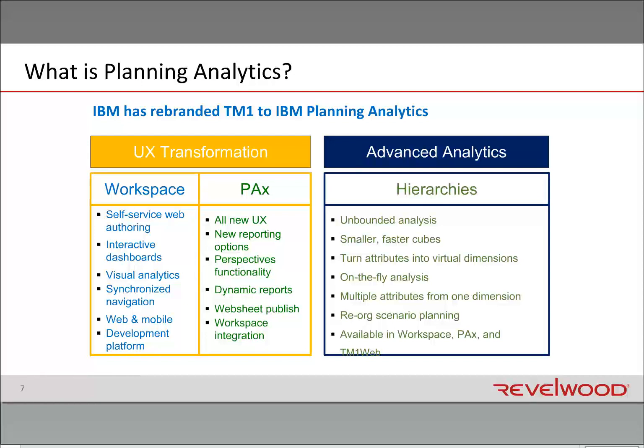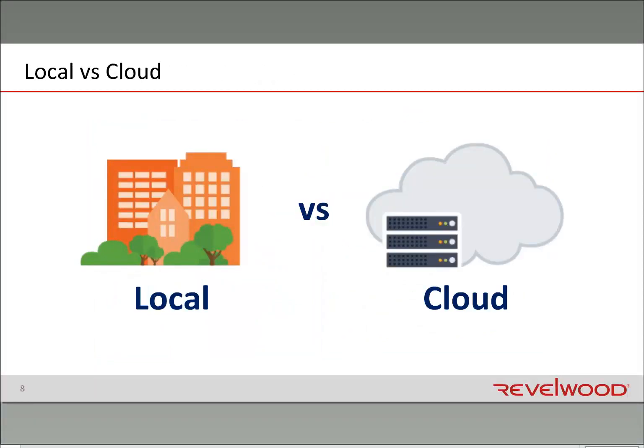As you consider your migration from TM1 10.22 into Planning Analytics, it's important to decide whether you want to stay on-premises or move to the cloud. This decision has many variables and will be driven by your own environment on a case-by-case basis. One very important thing to note: the software running on the cloud and the software installed on-prem are identical, so there is no difference in features. It's simply a matter of whether you want IBM to maintain your system or do it yourself.